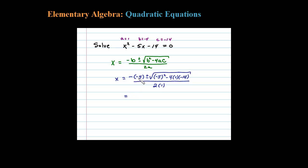And then simplify. So negative negative 5 is positive 5, plus or minus. Inside there we have 25 plus, negative 4 times negative 14 is 56, divided by 2.